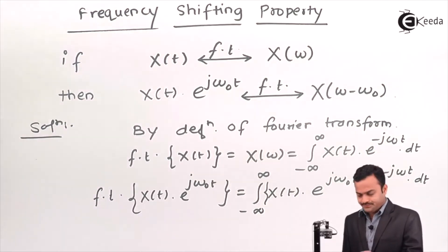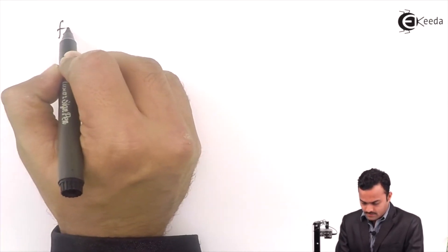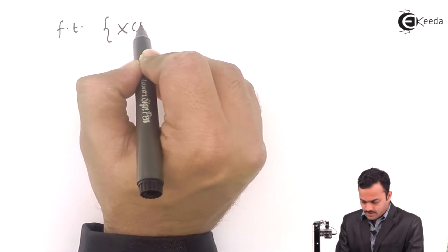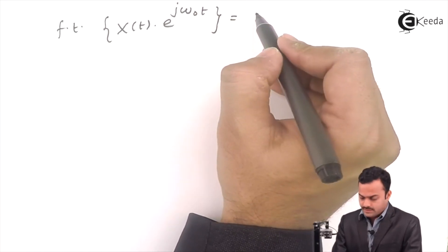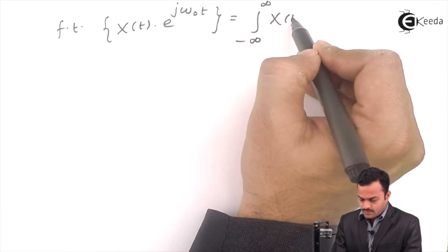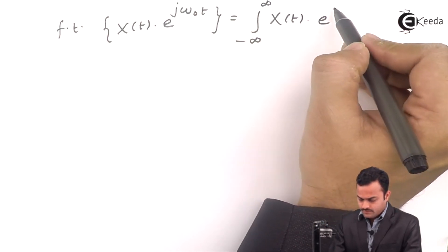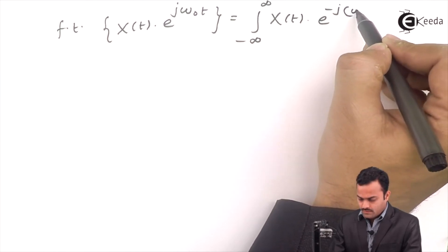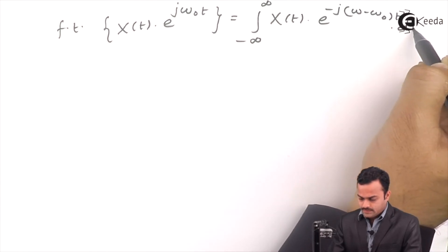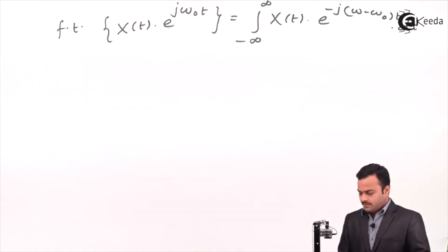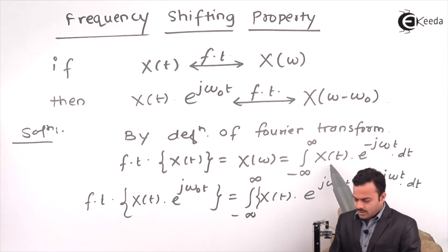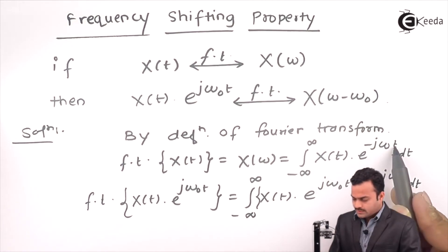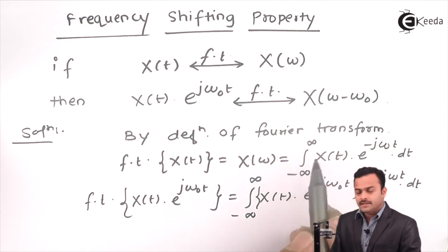So, the Fourier transform of x(t) into e raised to j·ω₀·t is nothing but the integral from minus infinity to infinity of x(t) into e raised to minus j·(ω − ω₀)·t, dt. Now, here we need to understand the definition very properly. The definition of Fourier transform states: the integral of x(t) with e raised to minus j·ω·t from minus infinity to infinity is X(ω).